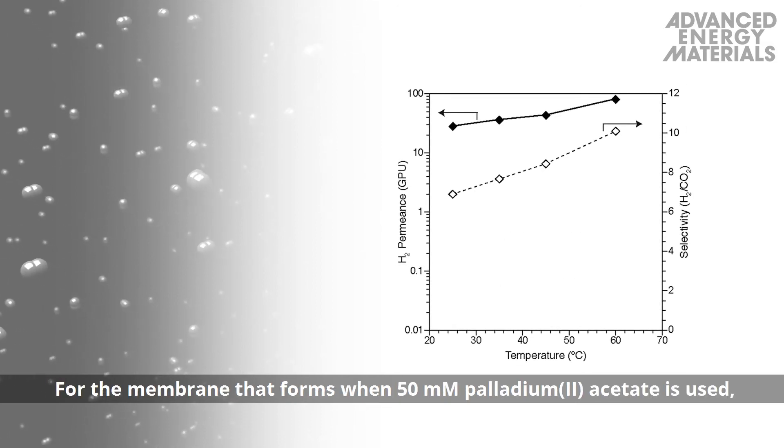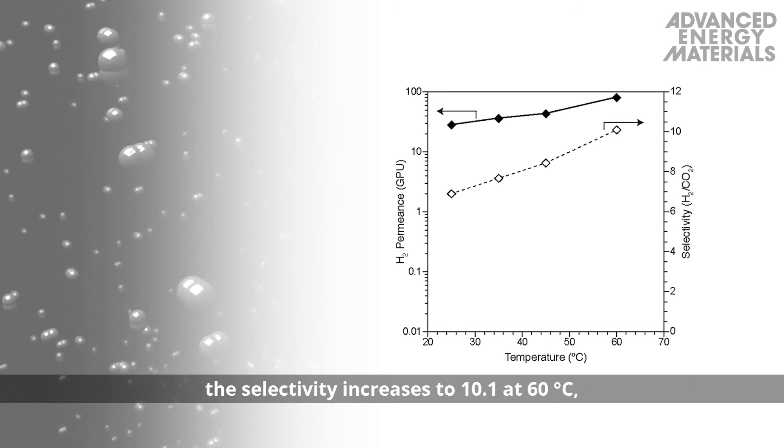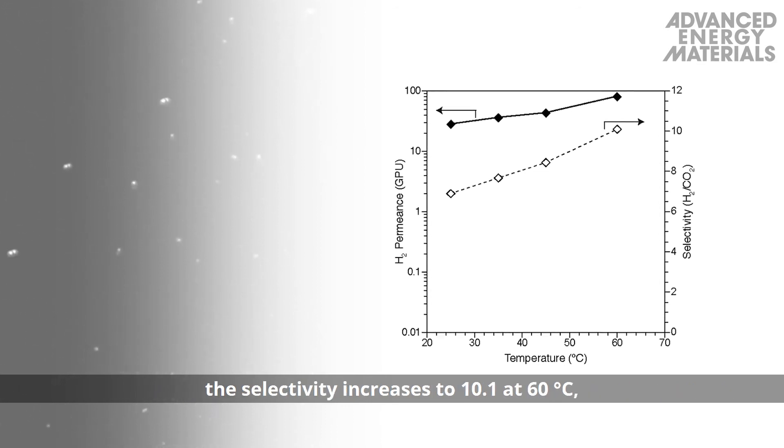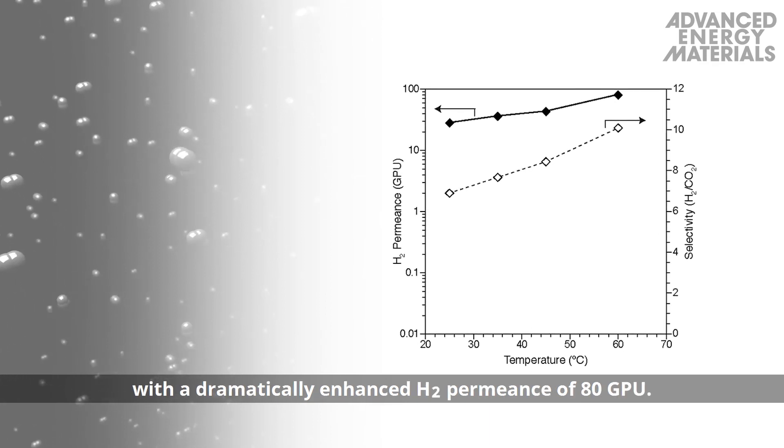For the membrane that forms when 50 millimolar palladium-2-acetate is used, the selectivity increases to 10.1 at 60 degrees C, with a dramatically enhanced H2-permeance of 80 GPU.